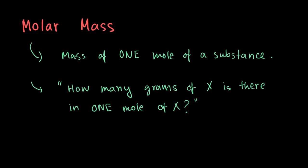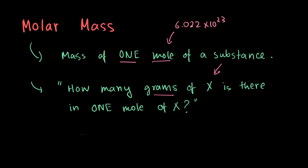Let us understand what molar mass is in very simple terms — it is just the mass of one mole of a substance, where a mole equals 6.022 × 10²³ entities. This answers the question: how many grams of substance X is there in one mole of X, or how many grams per mole? That is why its unit is grams per mole.